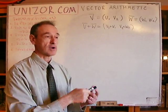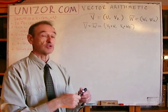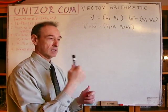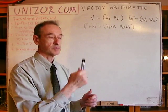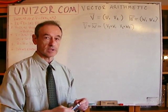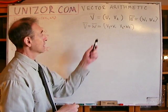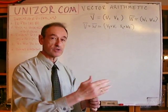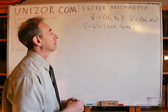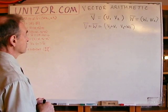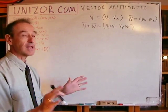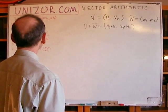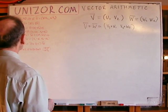To recap: in Problem 1, multiplying a vector by a constant means multiplying each component of the tuple representation. And when you add two vectors, you correspondingly add coordinates in the tuple representation. It's a very natural and easy-to-remember rule.